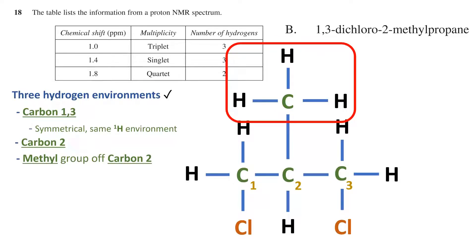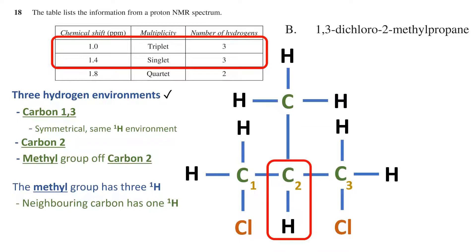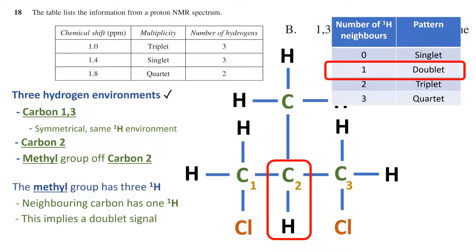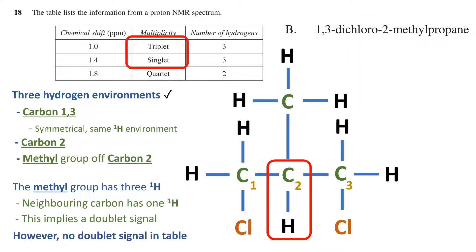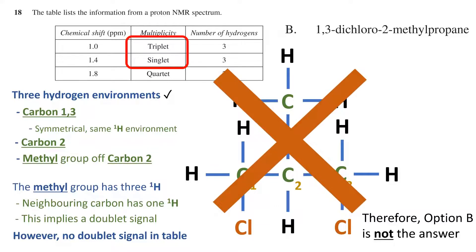Concentrating on this methyl group, we can see that it has three hydrogens. According to the table, the signal should have a shift of 1.0 or 1.4 parts per million and be either a triplet or a singlet. We can see that the neighboring carbon has one hydrogen attached. With one hydrogen, this implies that the multiplicity should be a doublet. However, there is no doublet in the two possible signals. Therefore, option B cannot be the answer either.